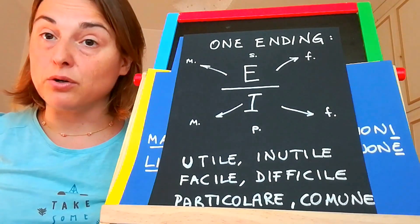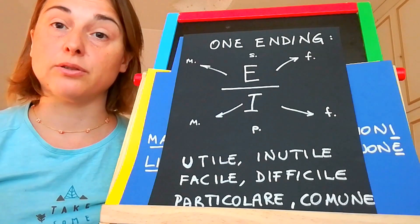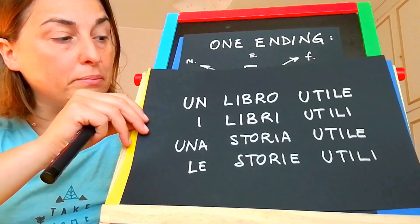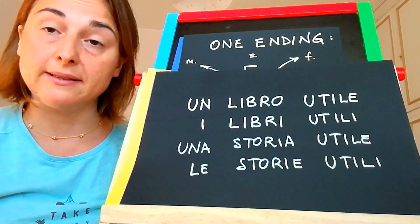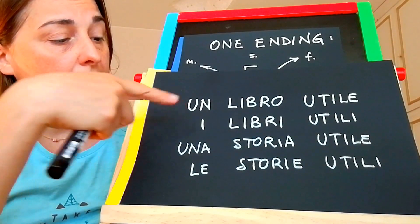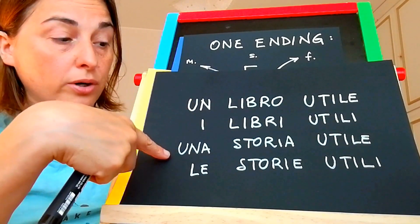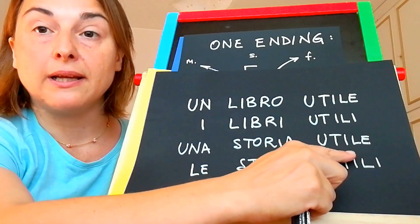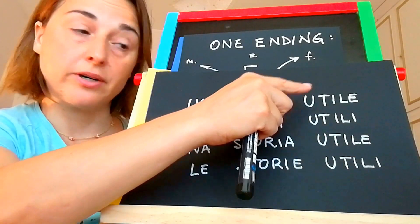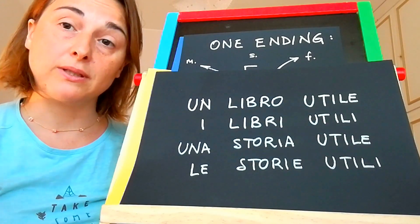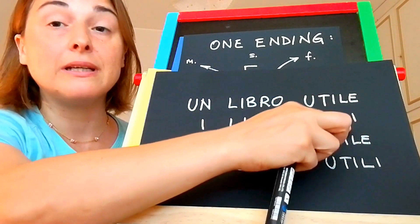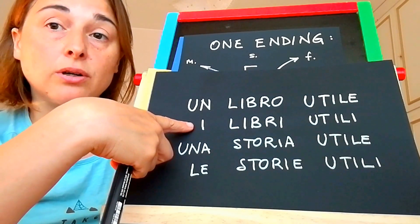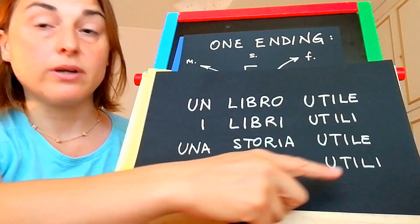Let's see in context what it means that this adjective does not change the termination for the masculine and feminine. We have the adjective utile. With the masculine noun libro — book — and the feminine noun storia — story. We say un libro utile and una storia utile. We don't say utilo or utila — this is wrong because the termination is only E. For the plural, the termination is only I: i libri utili, le storie utili.